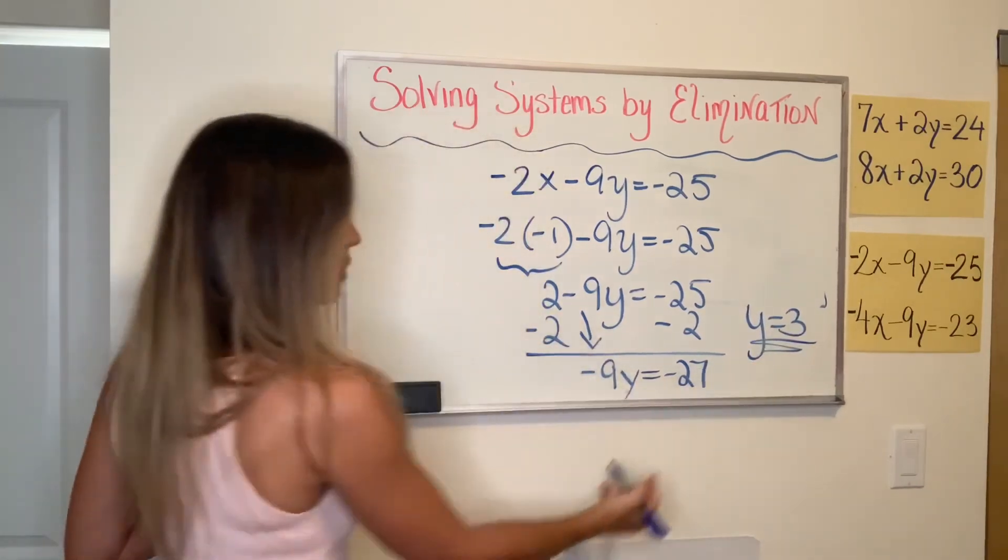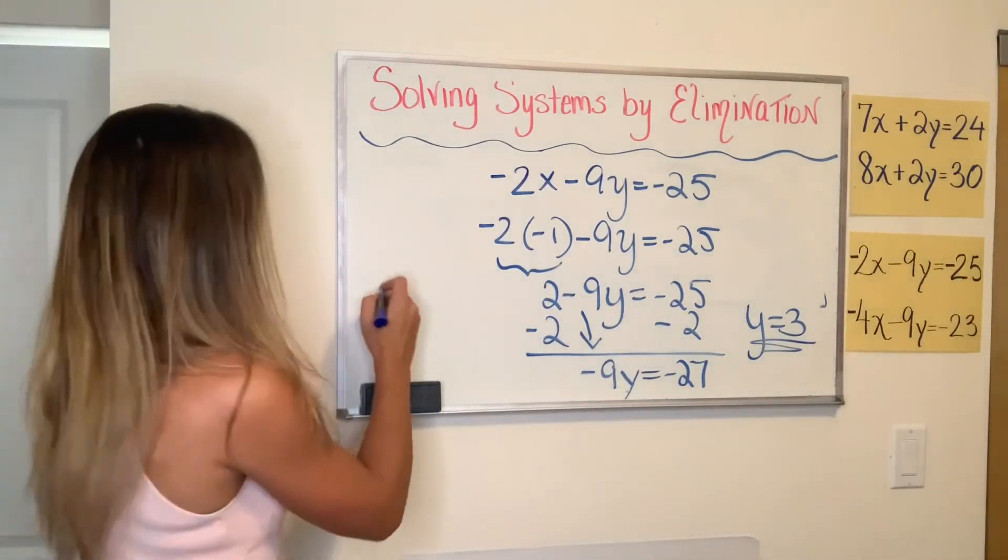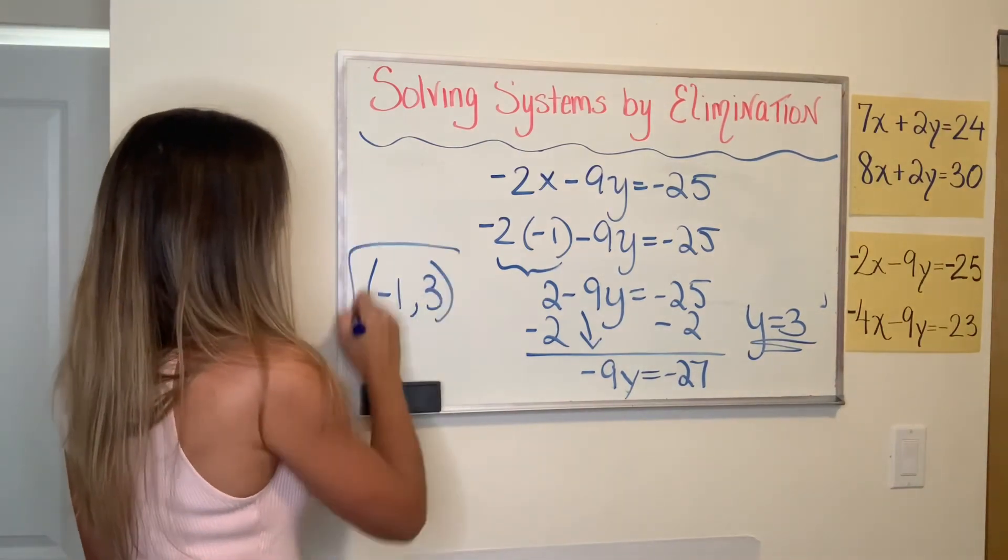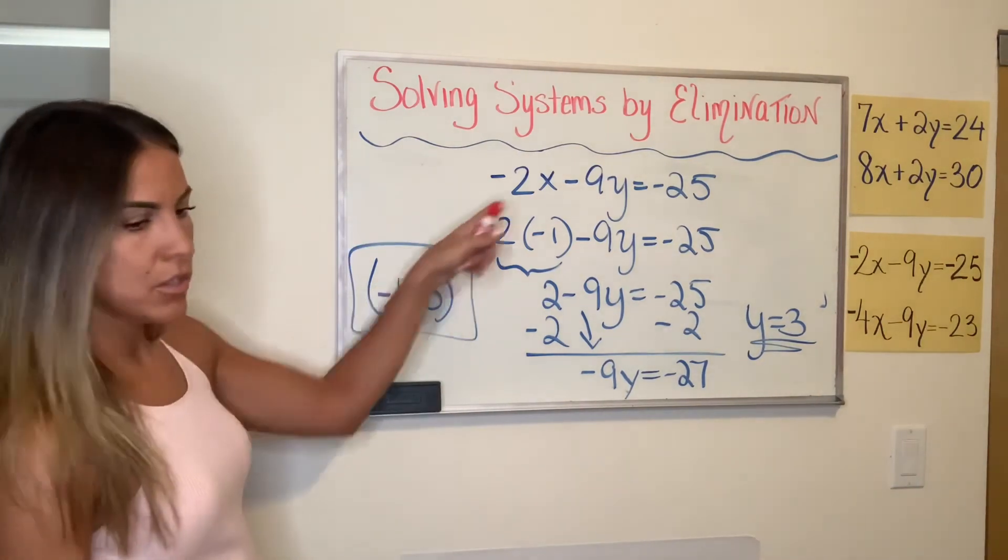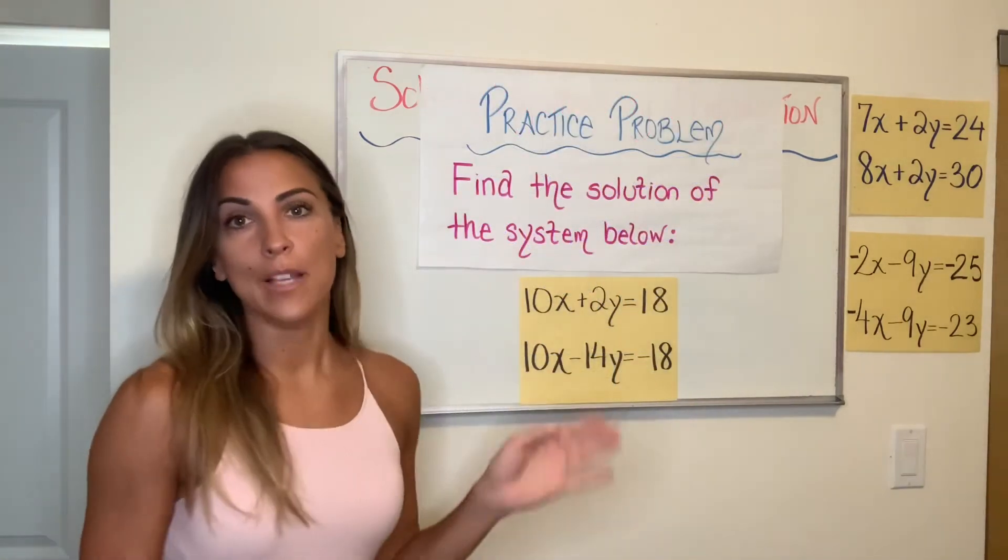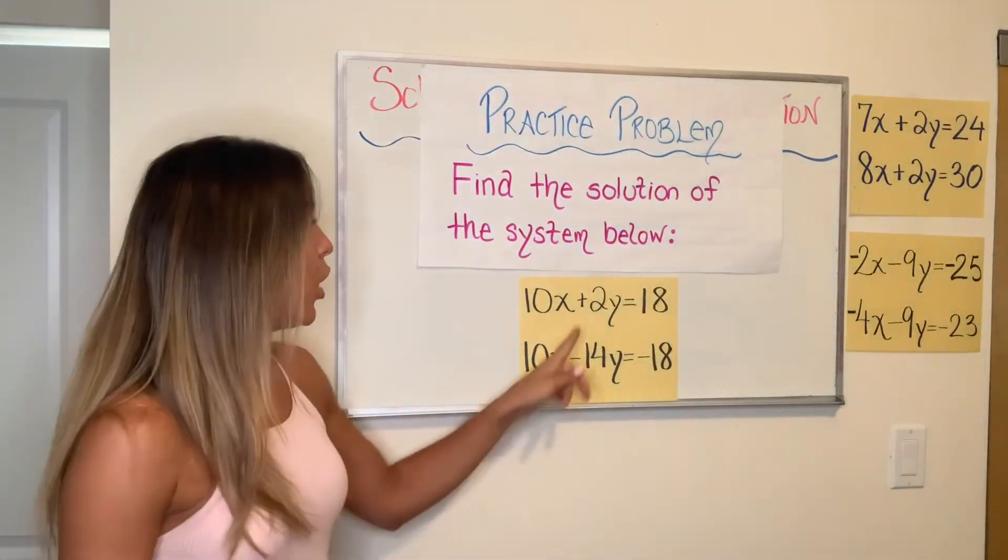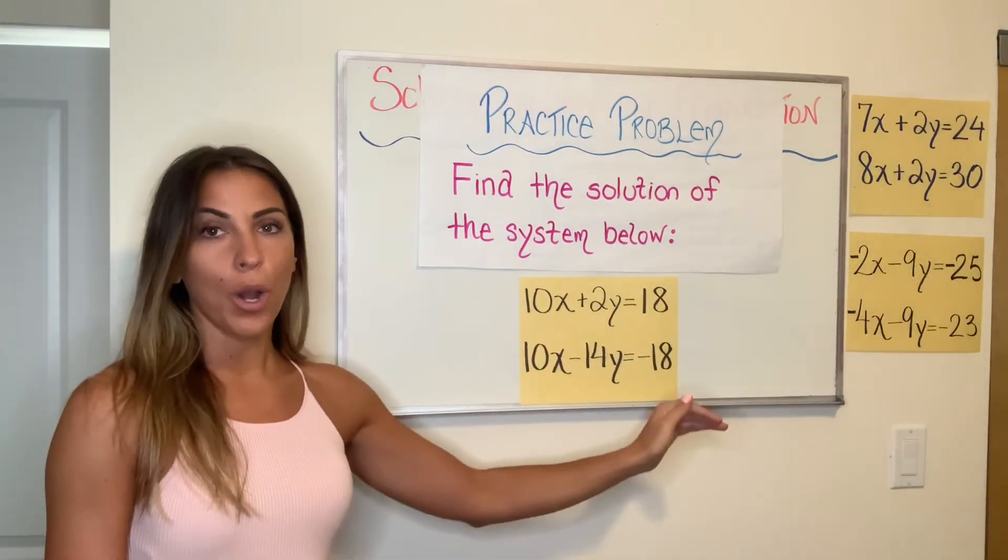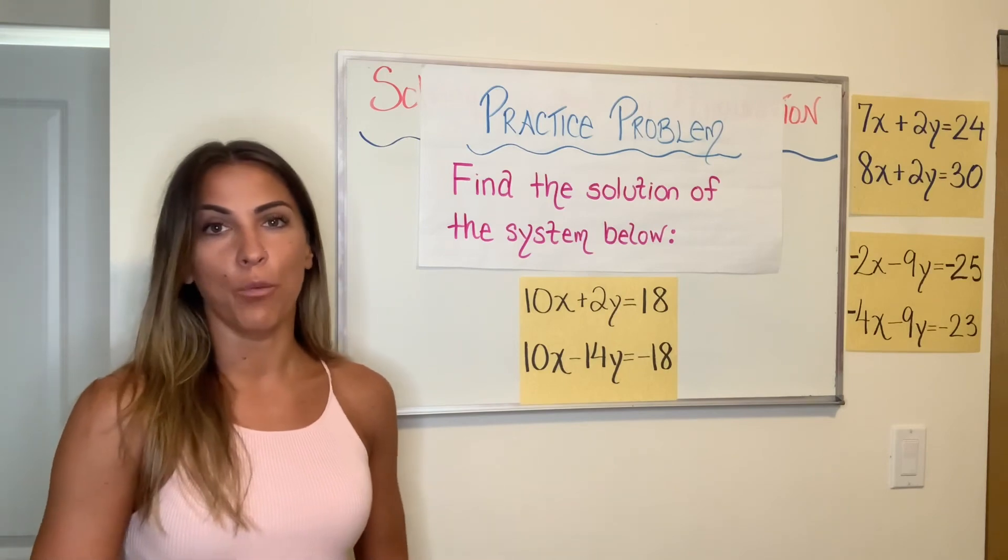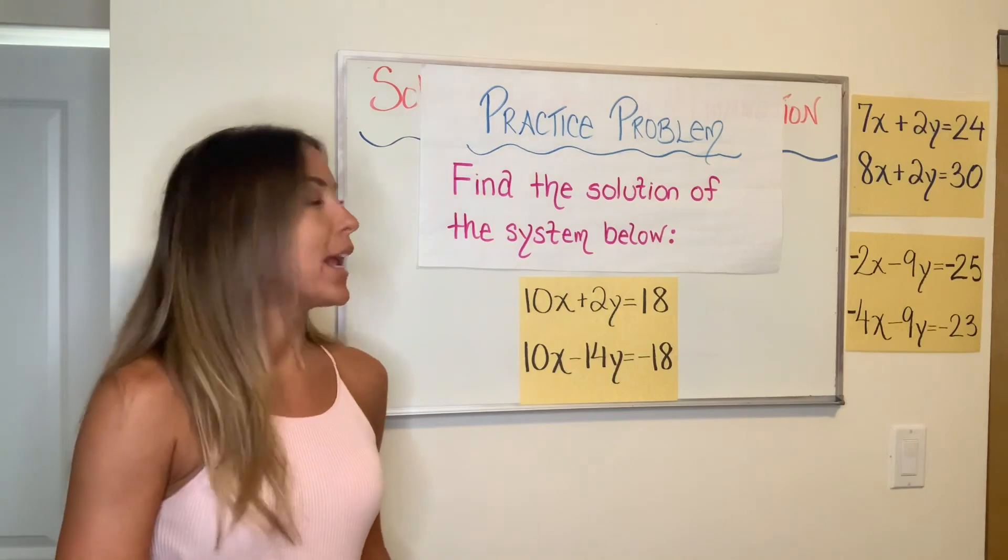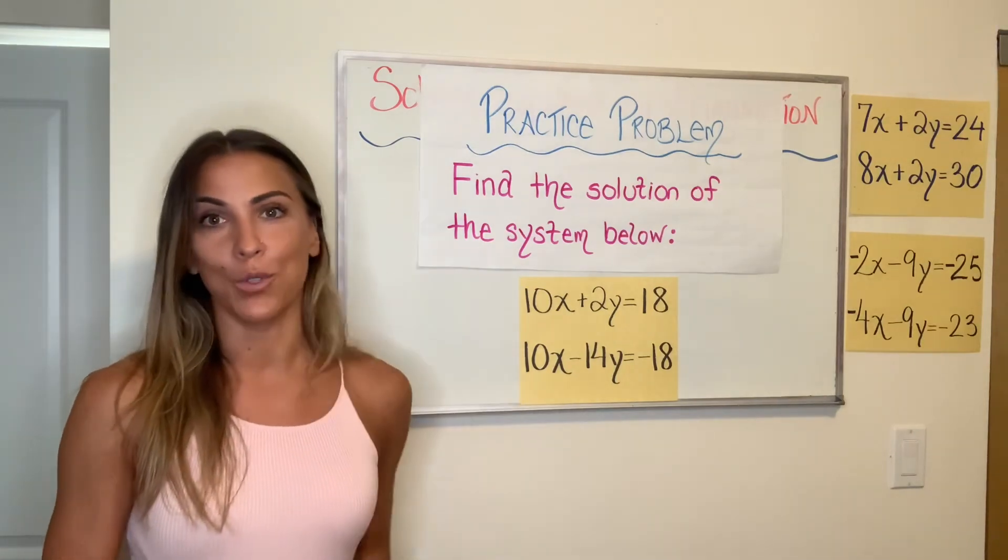So my Y value is 3. I believe our X value is negative 1, if I'm not mistaken. Negative 1, which means that this ordered pair is where these two lines would intersect if I was to graph them. Here's your practice problem, guys. Remember, you do have two options. We have the same coefficient, so you can choose to either subtract or multiply one of these equations by negative 1 and add, or try both methods because the more methods you have in your pocket, the better. Answer will be down in the description as usual.